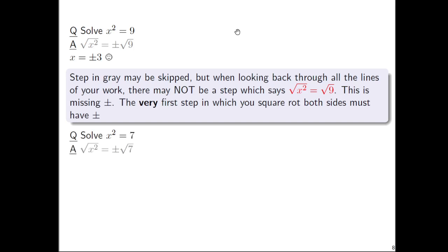Let's solve x² = 7. So √x² = ±√7. Again, simplifying the left side, you get just an x. This time around, the right side just doesn't simplify any further.